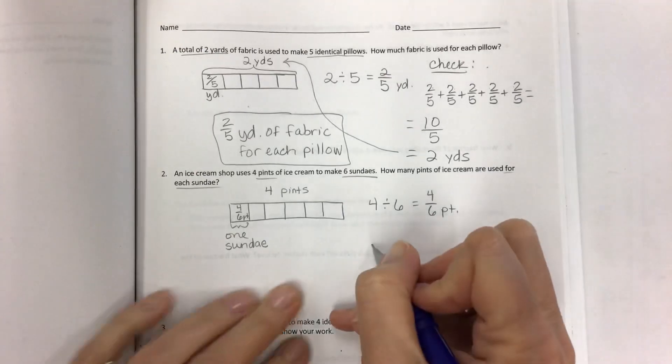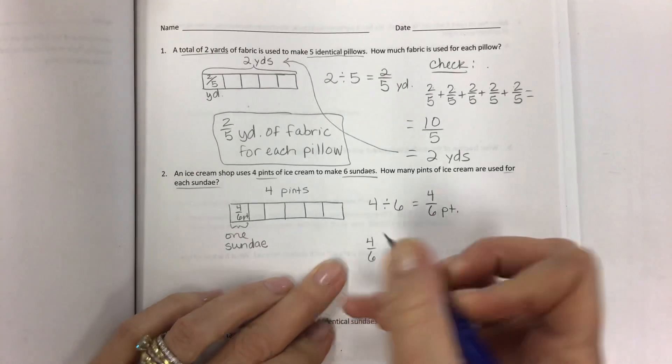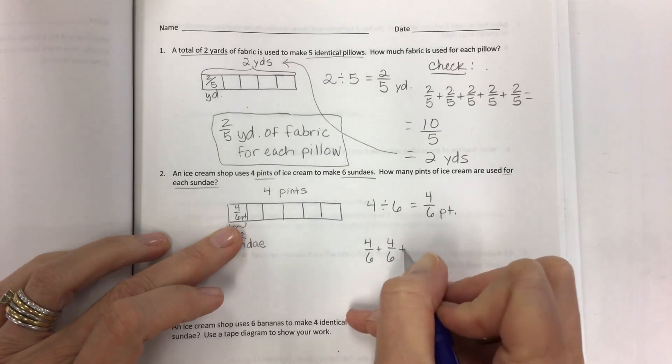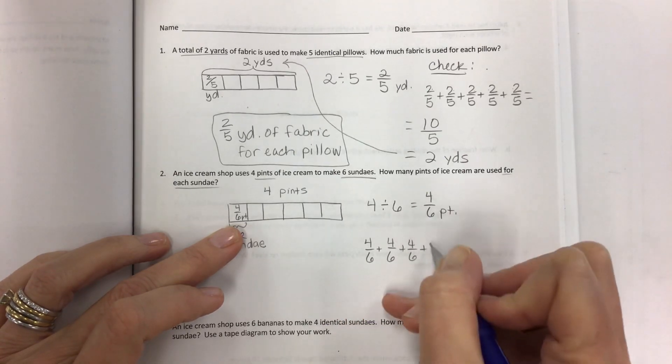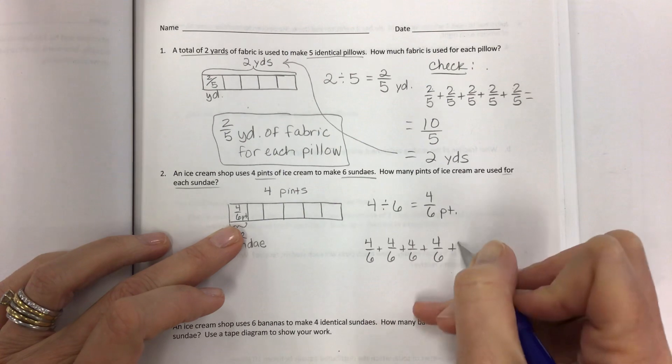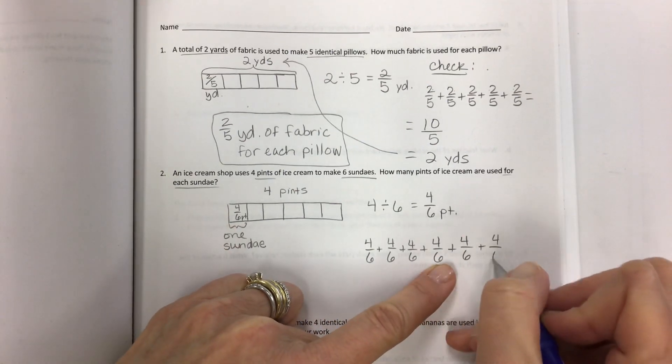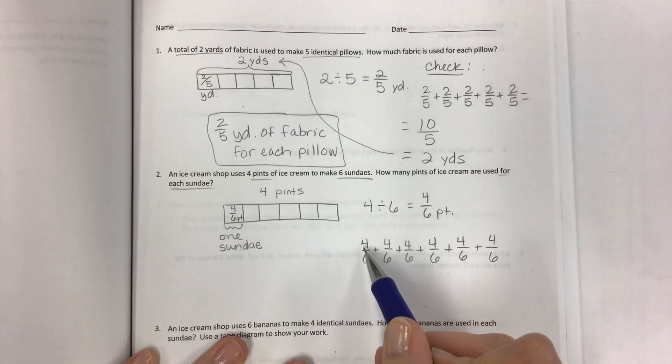Now prove it. Four-sixths of a pint six times. Three, four, five, six. And then skip count.